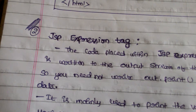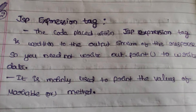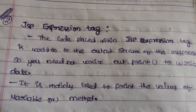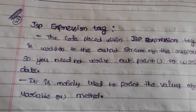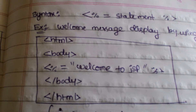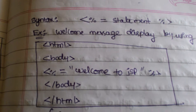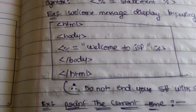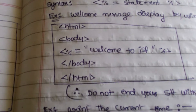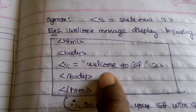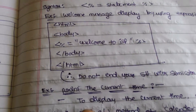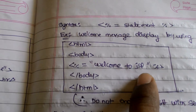The second one is the expression tag. If you want to print anything in the browser window, the syntax is less-than percent equals some statement, then close the expression tag. You don't need to write System.out.println — just write the statement inside the expression tag and this message will print in the browser window. Also, there is no need to end with a semicolon in the expression tag.